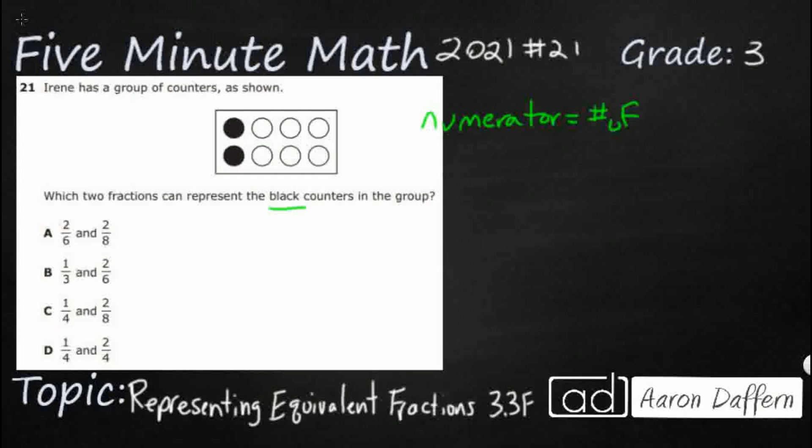And then our denominator is our bottom number. And so let's just put a little fraction bar there. It equals always the total. The numerator changes based on what you're trying to count. The denominator is always going to be the total.